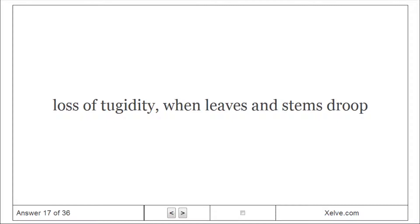Wilting: Loss of turgidity when leaves and stems droop.